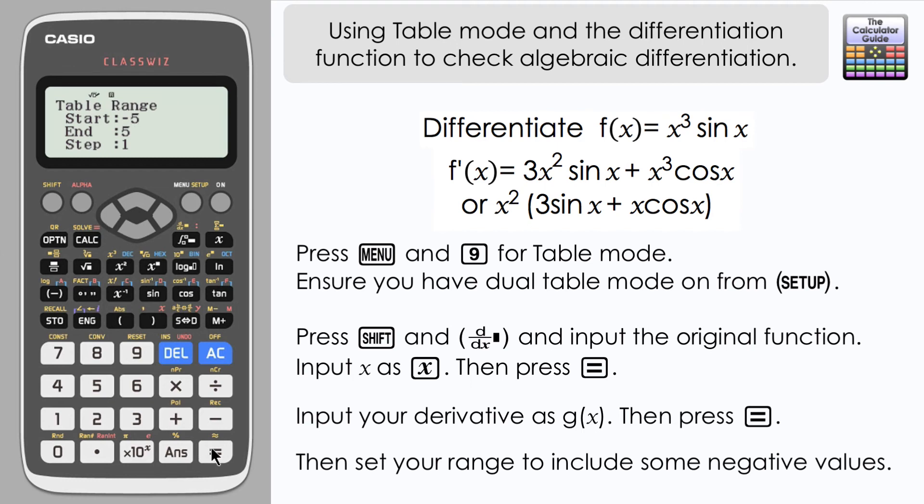So I'm going to start from -5 and work away up to an end value of 5. I will keep the step as 1, and so press equals. Now this will take a little bit of processing time. The ClassWiz needs to process all the figures here. And here we have our results.